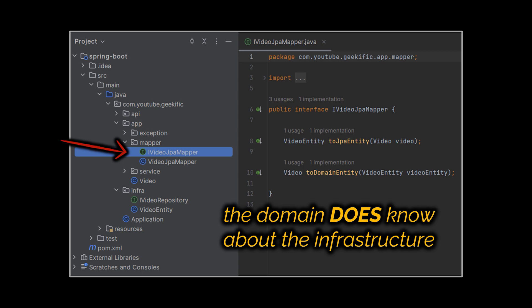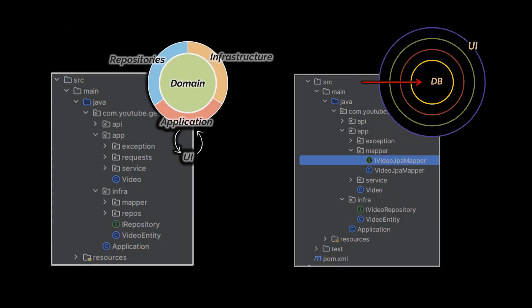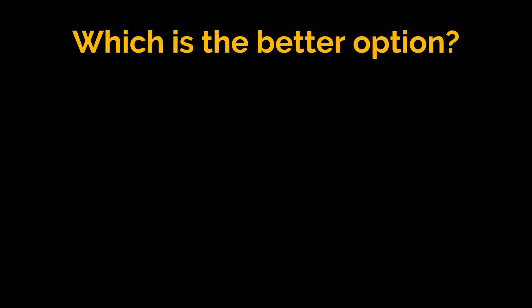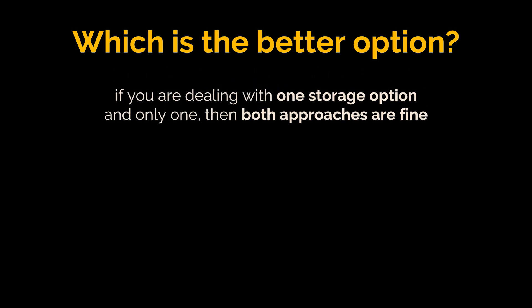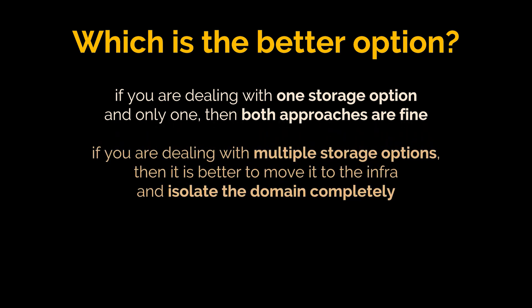So should we move the mapper to the infrastructure part or keep it in the core? Moving it to the infrastructure will ensure that the domain is completely isolated, but it will mess with the inward dependency we previously discussed. This is a big debate — in my opinion, if you are dealing with one storage option and only one, then both approaches are fine, and that is why we left it as is in the previous video.